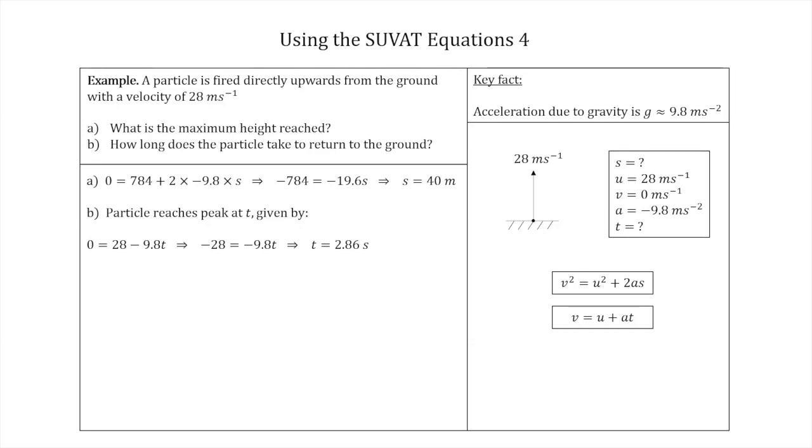So to get up to 40 meters, the particle takes 2.86 seconds. And always worth pointing out that time should always be positive, you can't get a negative time because that means you have moved backwards through time. So this is a positive time, so we're quite happy this is correct. If you've got a negative one, you've probably forgotten a sign somewhere, or not cancelled a minus sign.